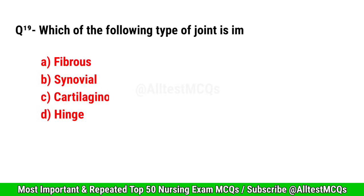Question No. 19. Which of the following types of joint is immovable? Correct option is A. Fibrous.